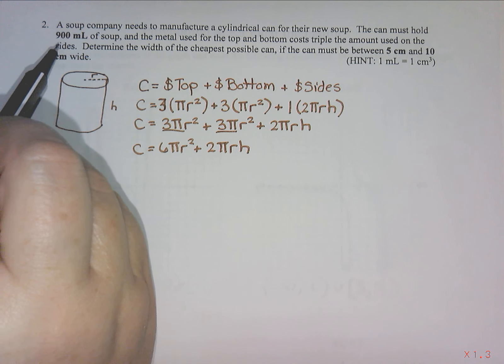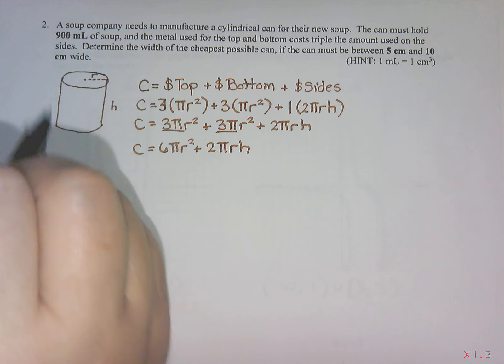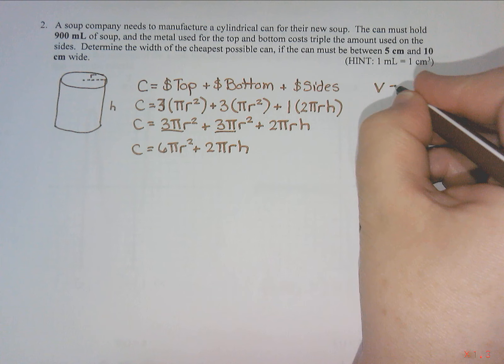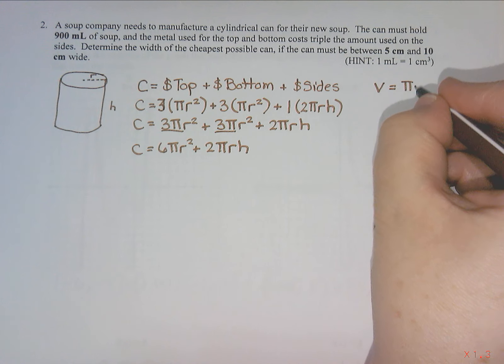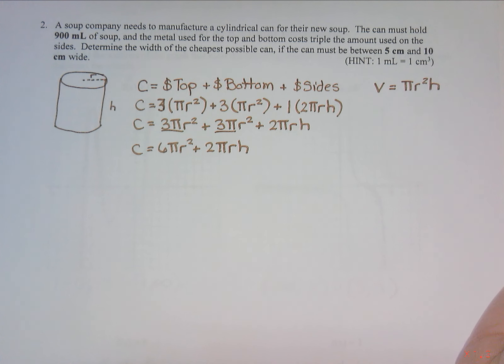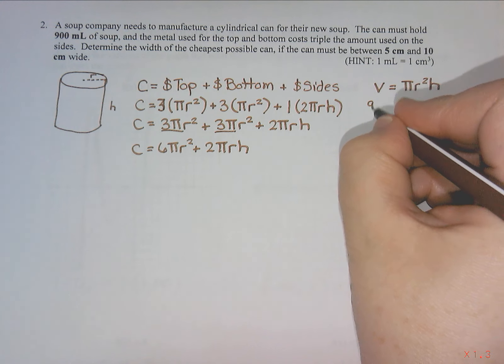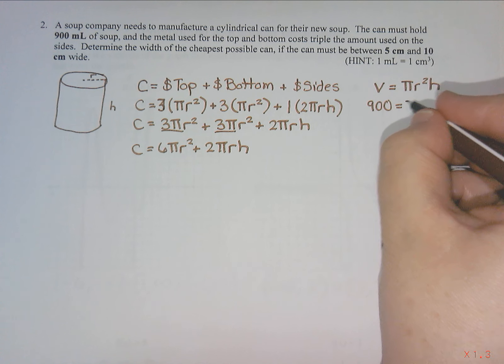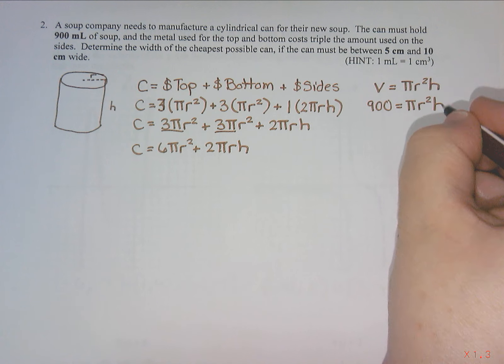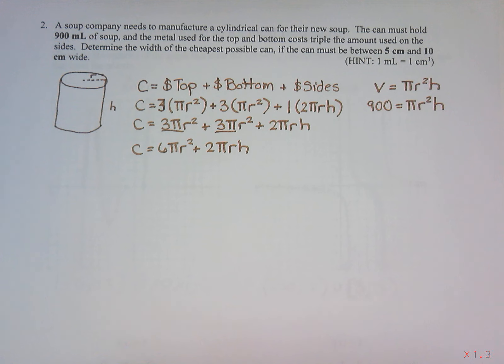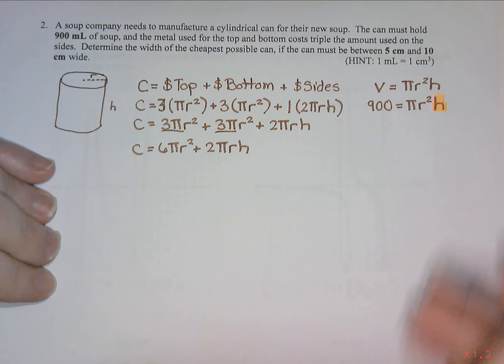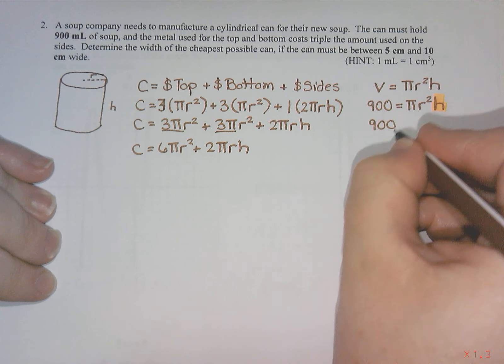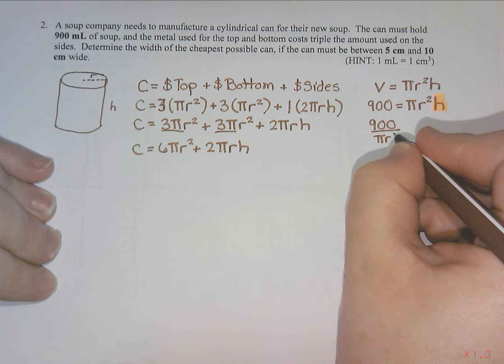That is going to come from the total amount of soup that it holds. The amount of soup that fits inside is volume. So I'm going to set up an equation for the volume. Volume of the cylinder is pi r squared h. I know my volume is 900 centimeters cubed. That is pi r squared h. I can rearrange for r or h. h is easier because it doesn't have an exponent.